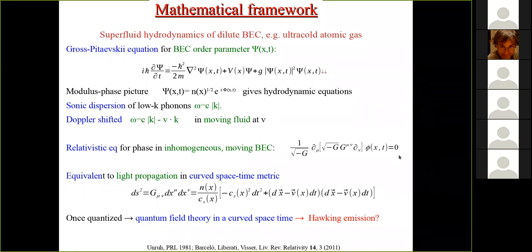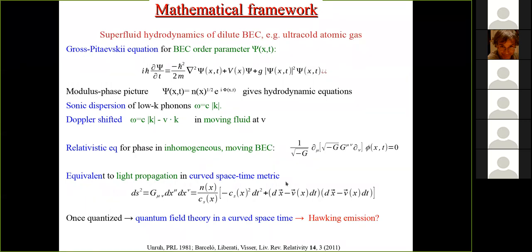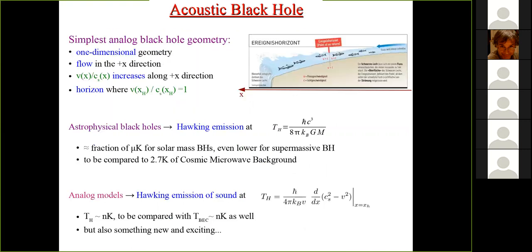Starting from the GPE — a classical equation — the crucial leap made by Unruh was to consider this as a quantum equation by putting a hat on top of phi. So phi is no longer a classical field but an operator. Upon this quantization, one can expect this quantum field theory on a curved space-time to give rise to Hawking emission phenomena. The original proposal was that this reformulation would produce Hawking emission of sound waves from an acoustic black hole. The key challenge in the 1980s was obtaining systems with sufficiently low temperature for this physics to be observed.